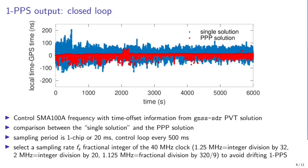The objective of controlling the oscillator is to prevent the frequency output from exceeding ±100 nanoseconds from the genuine 1 PPS output. In the closed-loop measurement, the SMA-100A frequency is controlled with the PVT solution. GNSS-SDR can provide either a single solution or a precise position solution; the precise solution exhibits smaller fluctuations, but even the single solution has peak-to-peak fluctuation well below 100 nanoseconds. The sampling period is one chip rate or 20 milliseconds, and the control loop tunes the time output every 500 milliseconds — twice per PPS period.